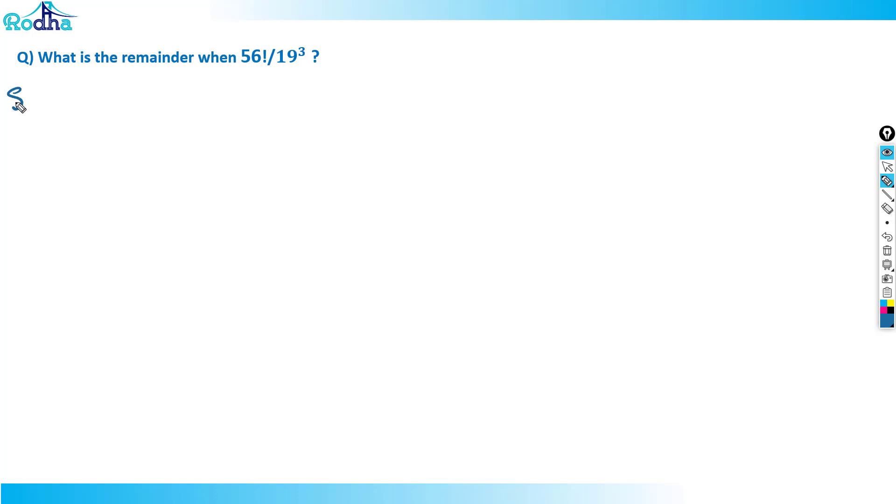Look at this question. It is actually 56 factorial divided by 19 cubed. What is the remainder when 56 factorial is divided by 19 cube? Now obviously, I taught you a concept of cancellation factor in the remainders.